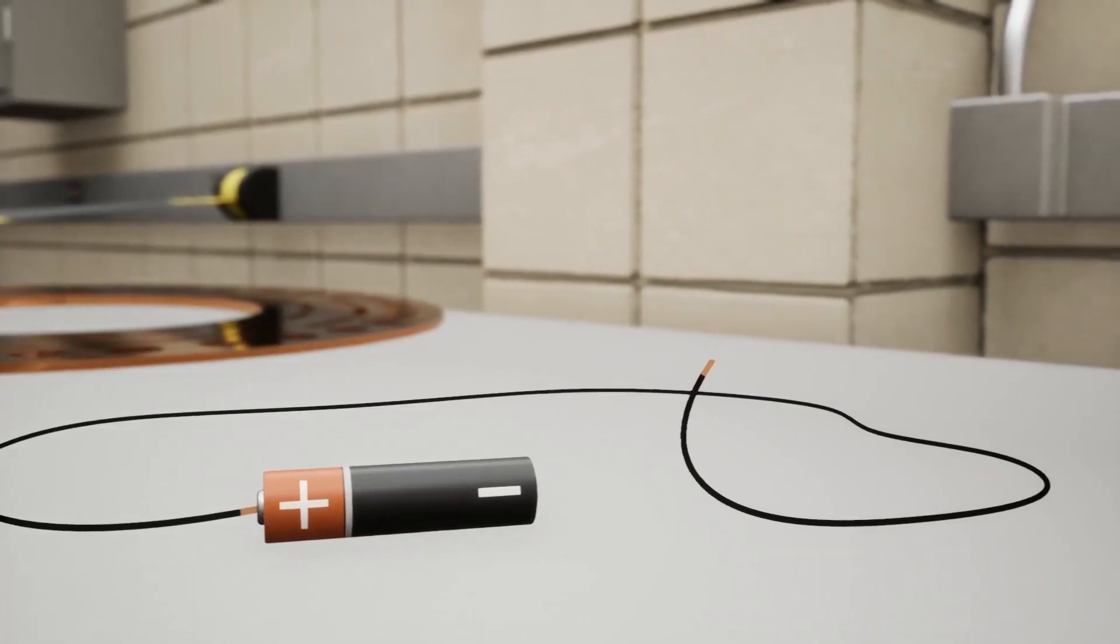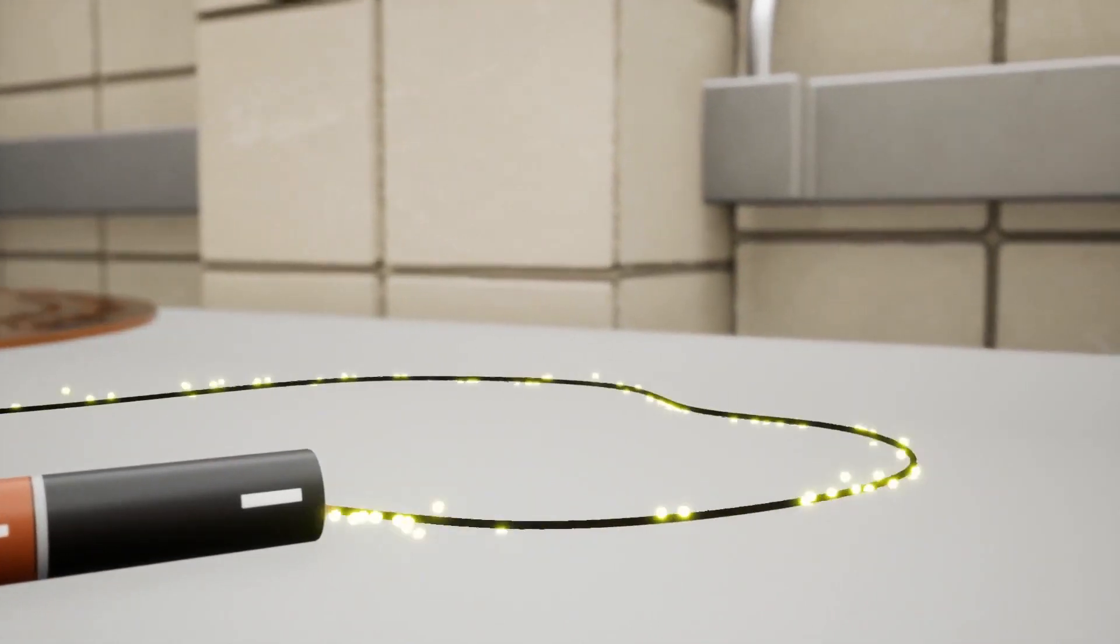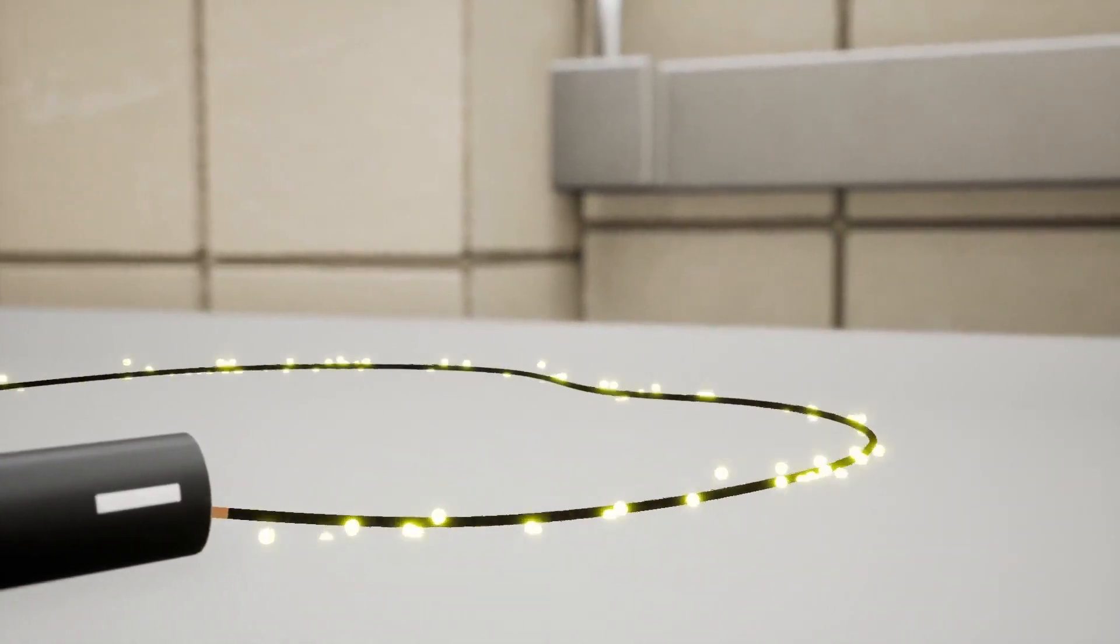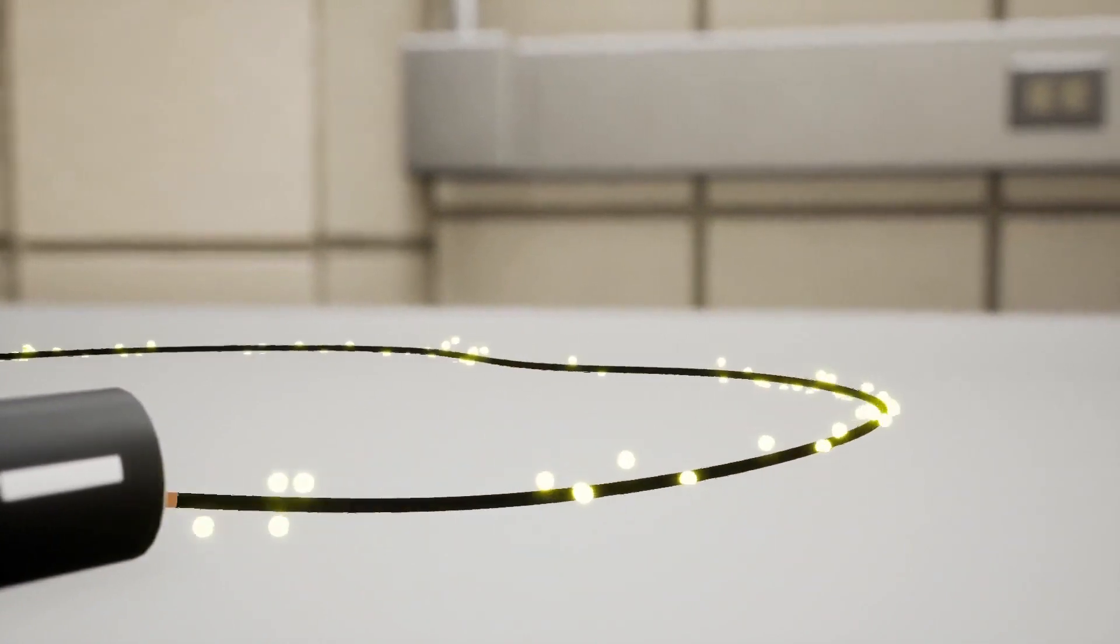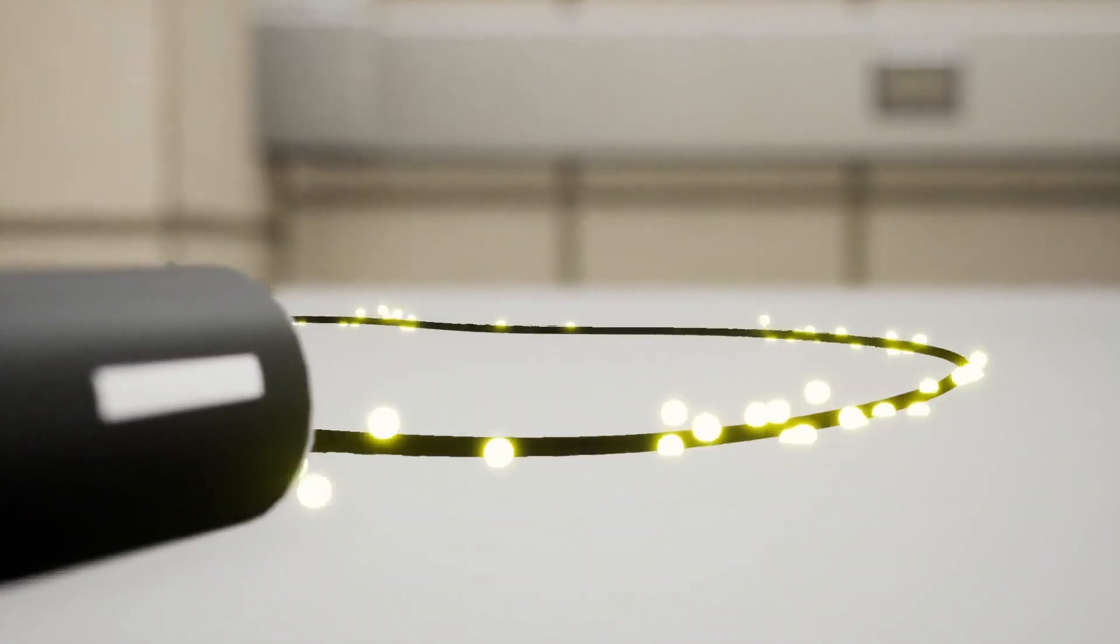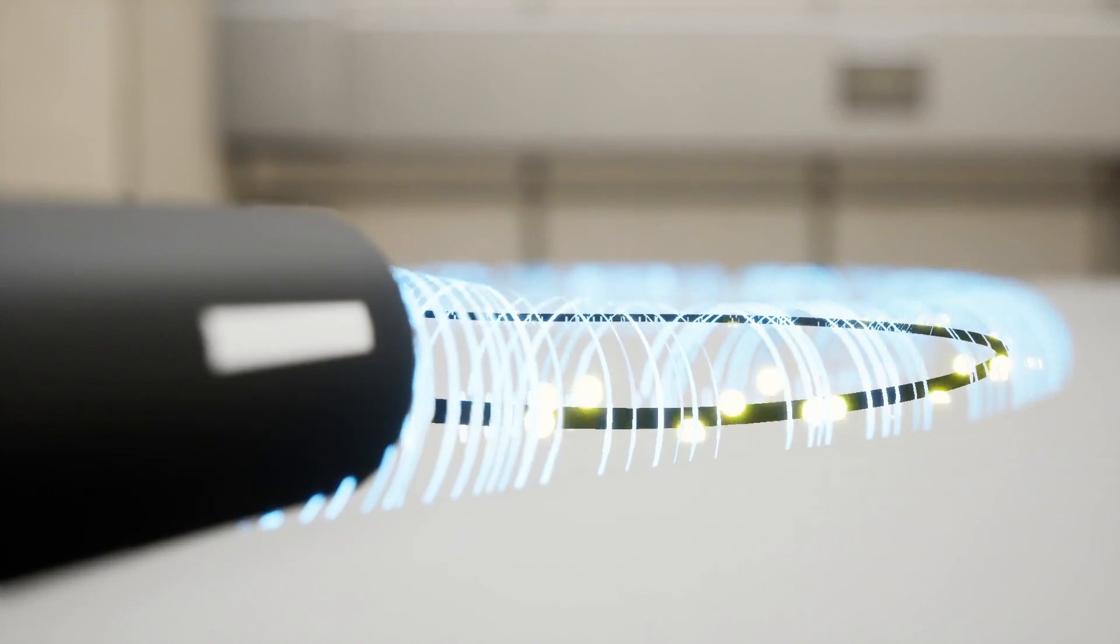You can prove this yourself by making your own electromagnet. Electrons actually move from negative to positive, but since the convention is to think of electricity as going from positive to negative, that's how we've shown it here.